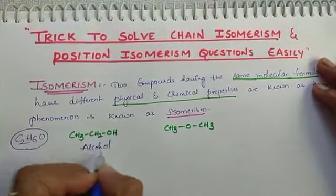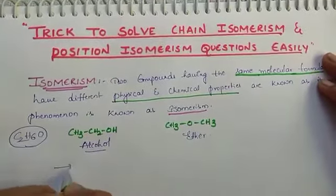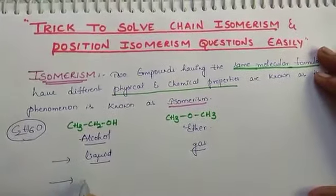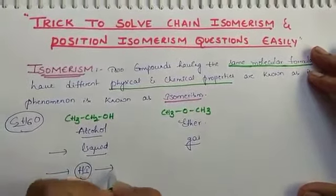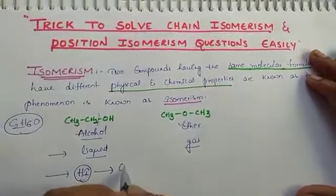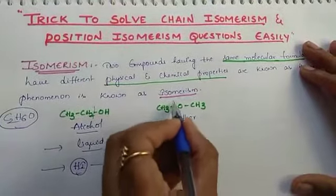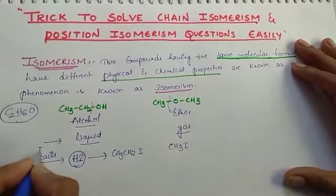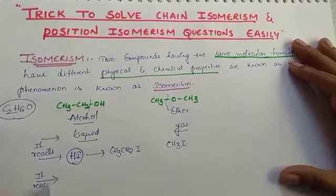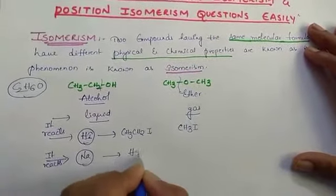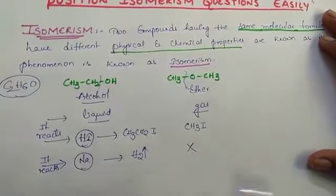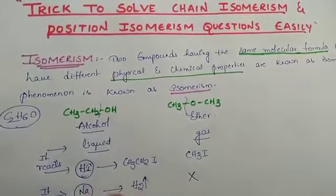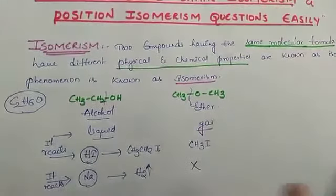The first compound is alcohol and it is a liquid. The second is an ether and it exists in gaseous state. Alcohol reacts with hydrogen iodide to form CH3CH2I, while ether reacts with HI to form CH3I. Alcohol reacts with sodium and releases hydrogen gas, whereas ethers won't react with sodium. So these two compounds with the same molecular formula have different physical and chemical properties.